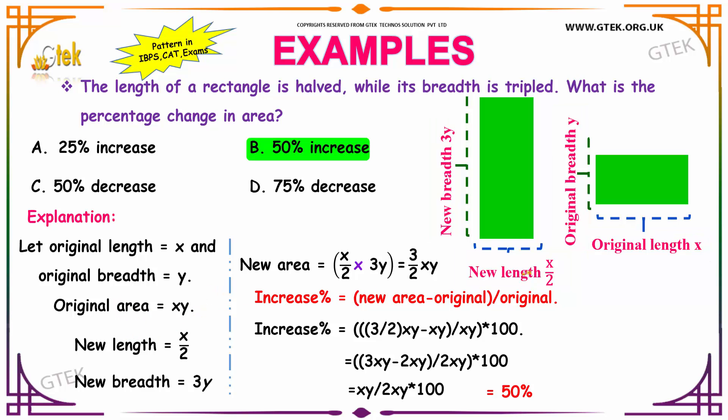The original area is obtained by length into breadth, so that is x into y. Our new area is length into breadth: new length is x by 2 multiplied by new breadth 3y, which is 3 by 2 xy.